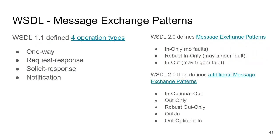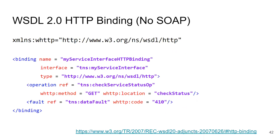Within WSDL 2.0 there are many message exchange patterns predefined. In WSDL 1.1 we had the basic four. In WSDL 2.0's core specification there is 'in-only', 'in-out', and 'robust in-only' — robust meaning it can trigger a fault. Another specification extends the number of message exchange patterns further. This is just so you are not surprised if you see some of those patterns used with WSDL 2.0.